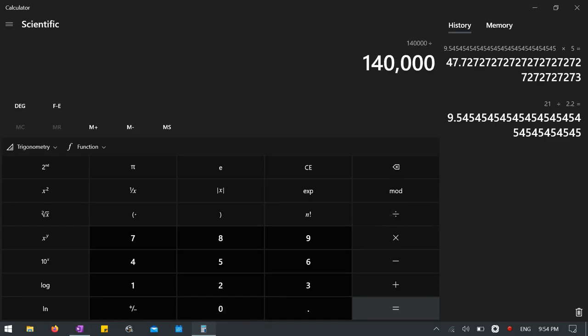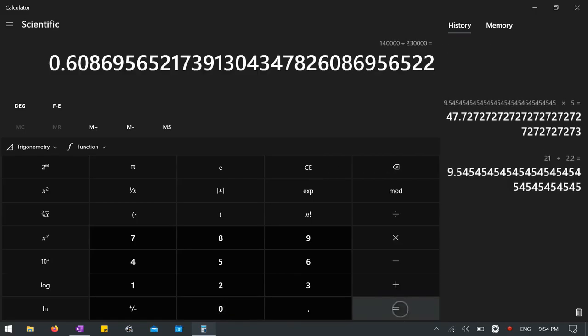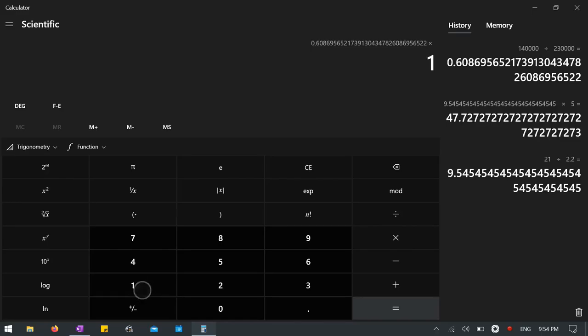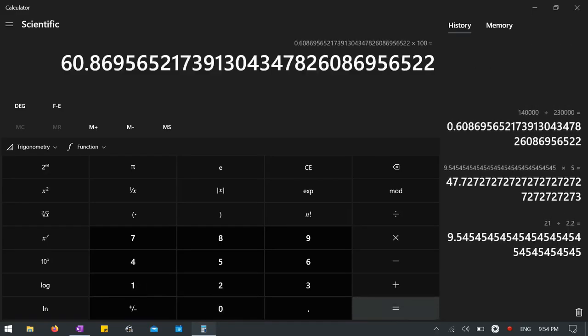So 140,000 divided by 230,000 equals... So you're looking at the decimal. To get to a percent, you can either just move the decimal place over twice. You can also accomplish that by multiplying by 100. And there we go, 60.869.